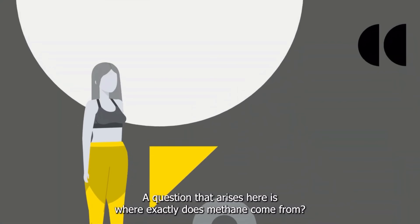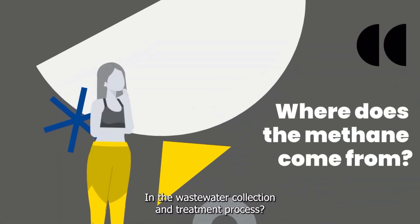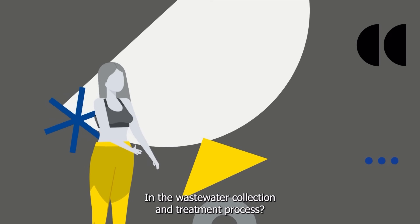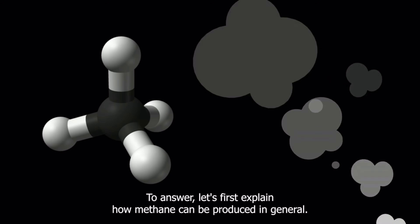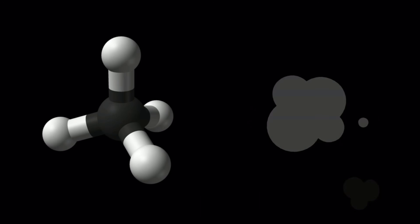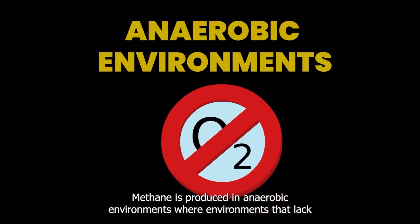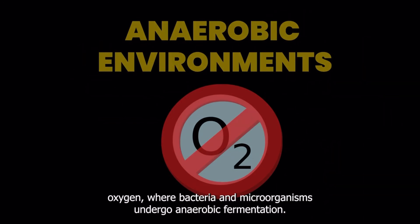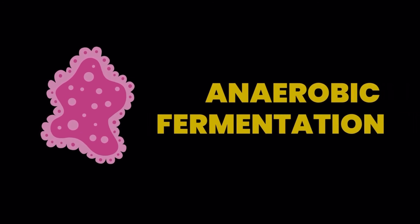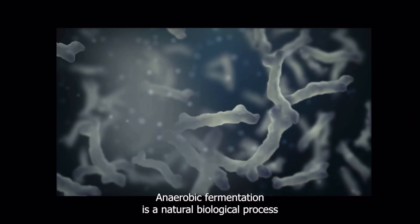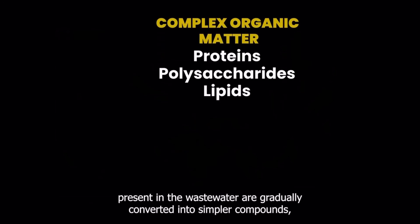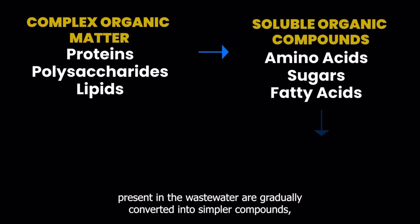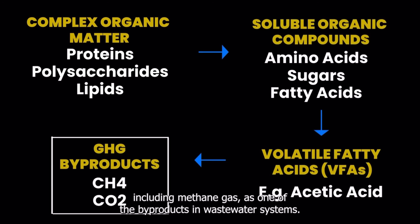A question that arises here is where exactly does methane come from in the wastewater collection and treatment process? The answer is less straightforward than that of carbon dioxide's. To answer, let's first explain how methane can be produced in general. In the context of these videos, methane is produced in anaerobic environments, or environments that lack oxygen, where bacteria and microorganisms undergo anaerobic fermentation — a natural biological process that occurs in the absence of oxygen, where complex organic compounds present in the wastewater are gradually converted into simpler compounds, including methane gas as one of the byproducts.